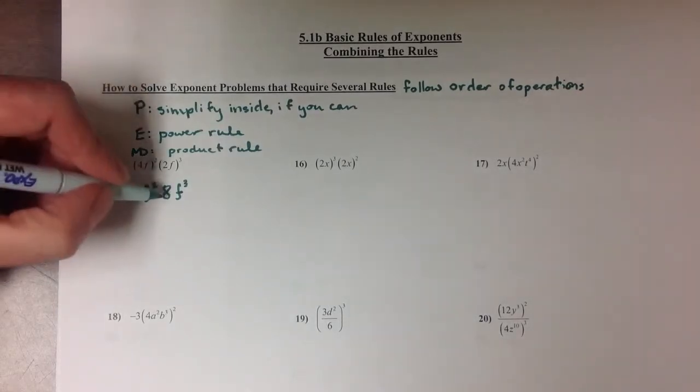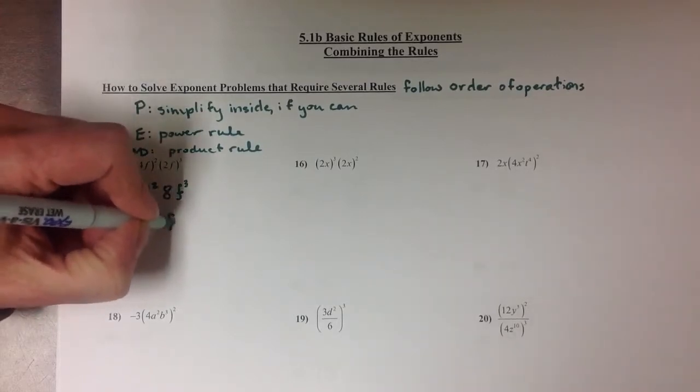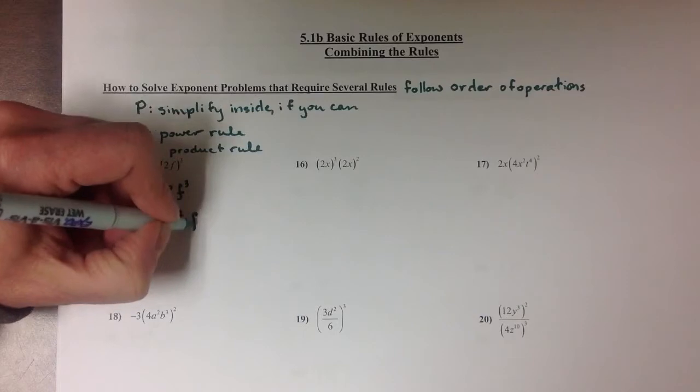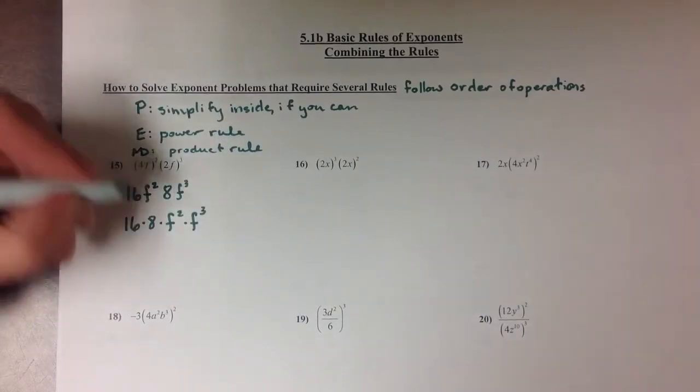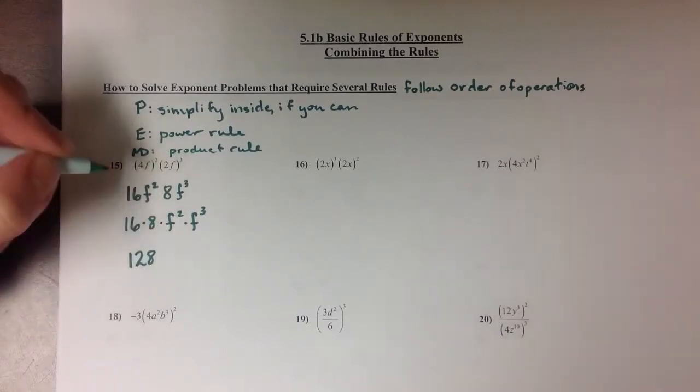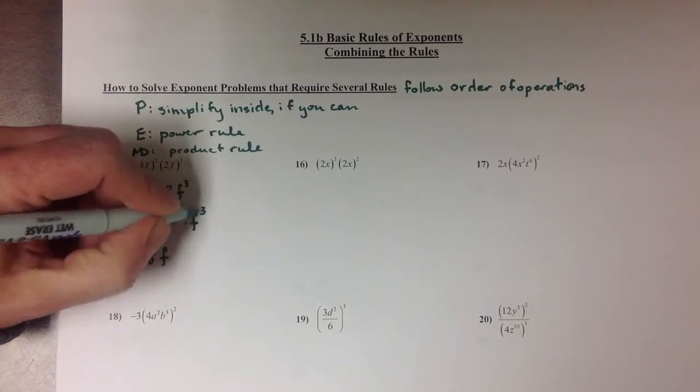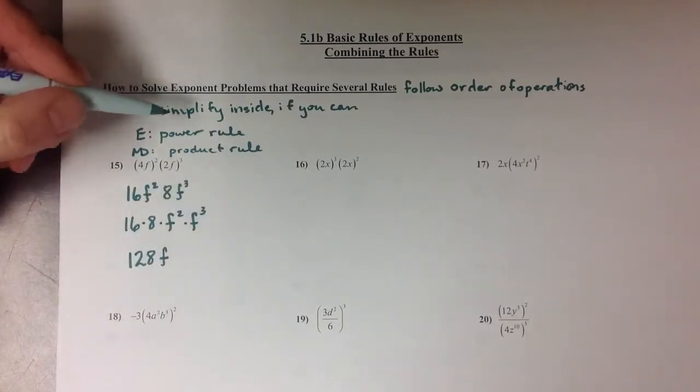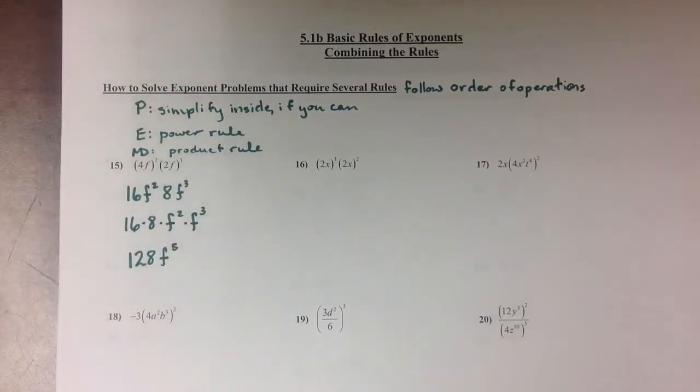Then the associative property says it's okay if I group these differently. I can change this into 16 times 8 times f squared times f cubed. When I multiply the 16 and 8 together, I get 128, and the f squared times f cubed, remember that's our product rule, we're going to add the 2 and the 3, not multiply them. So that becomes 128 f to the 5th power.